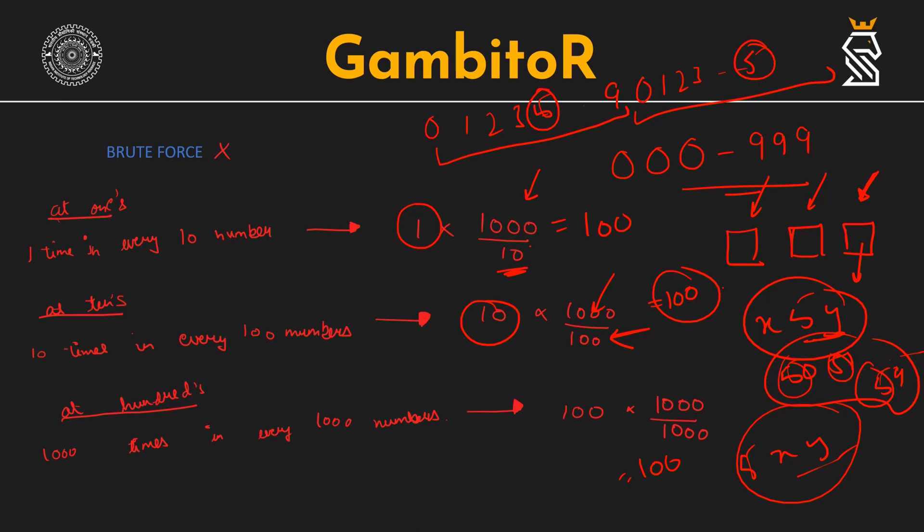Therefore, 100 times 1000 divided by 1000 equals 100. So, 100 times on 1s place, 100 times on 10s, 100 times on 100s, total will be 300 and sum of these digits will be 3. Hence, our answer.